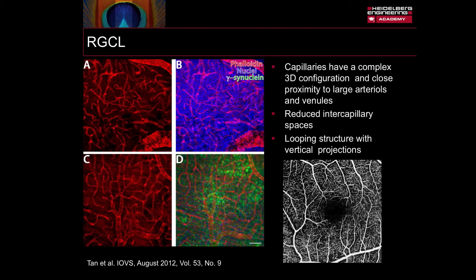Within the retinal ganglion cell layer, the capillaries have a complex three-dimensional configuration and close proximity to the large arterioles and venules. There are reduced intercapillary spaces, and the capillaries have a looping structure with vertical projections. The configuration of the vascular tissue reflects the high metabolic demand and blood supply of the ganglion cell layer.